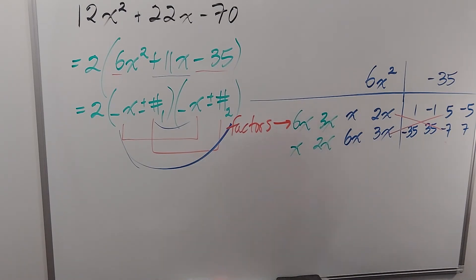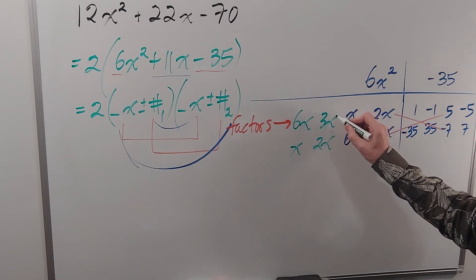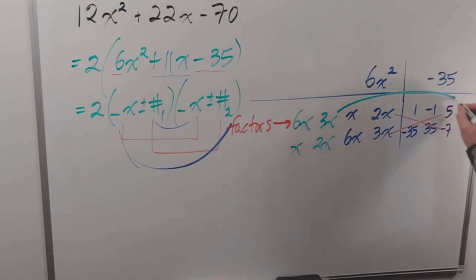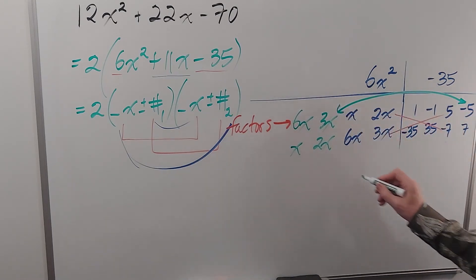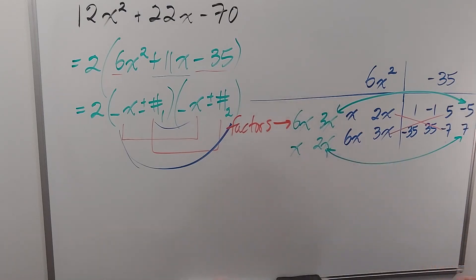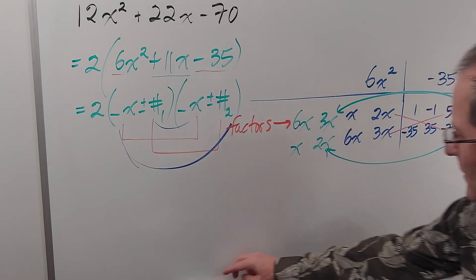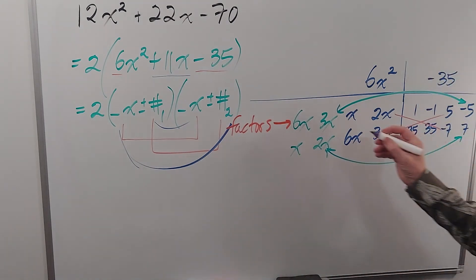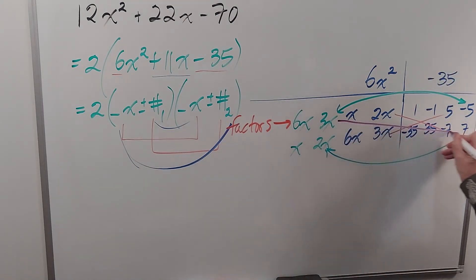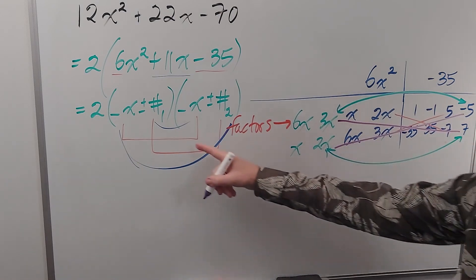Well it turns out that the one that works is the 3x goes with the negative 5. So it's going to be these here and the 2x goes with the 7. So to check that I have to multiply diagonally as explained over here.